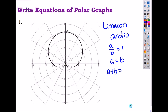So one, two, three, four. So A and B must be then two. And it's reflecting on the pi over two, the y-axis. So it is R equals to two plus two sine theta.